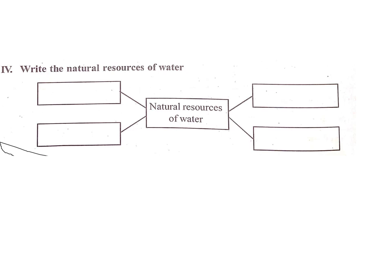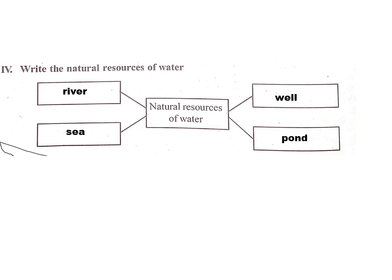Write the natural resources of water. Tell me, children, what are the natural resources? One is a well, another one is a pond, and another one is the sea and also the river. These are the natural resources of water.